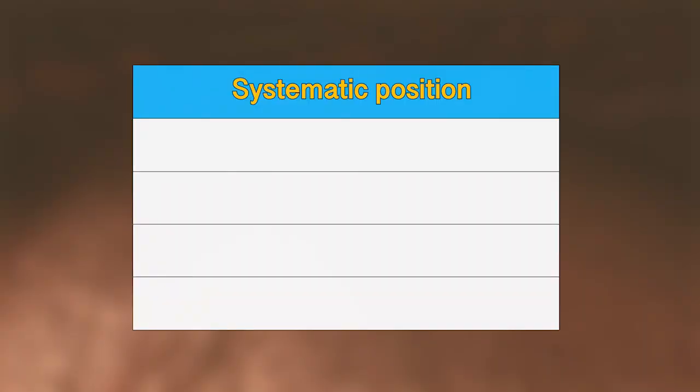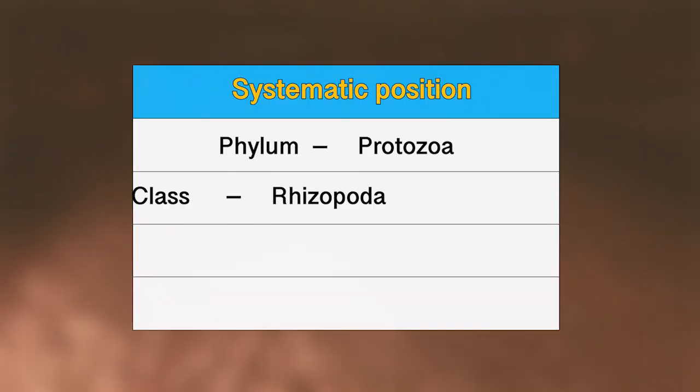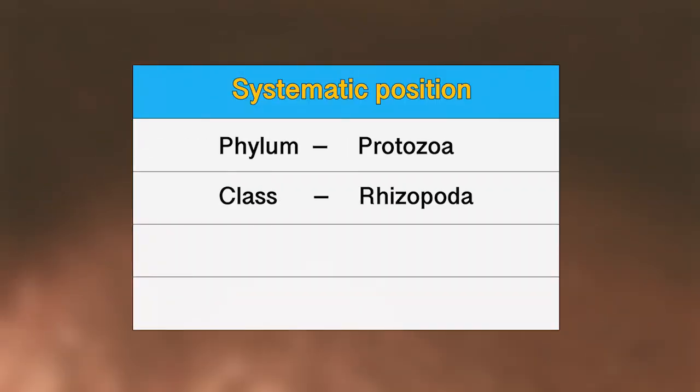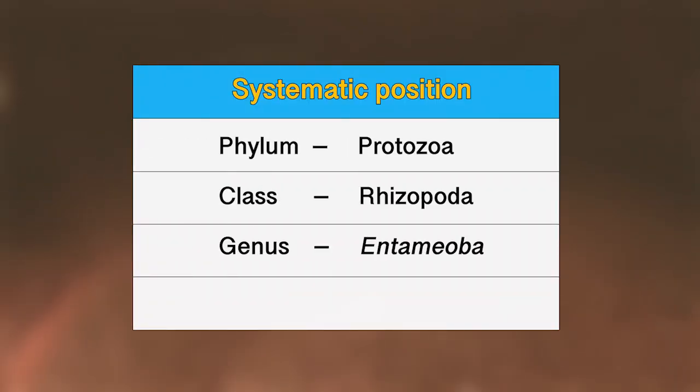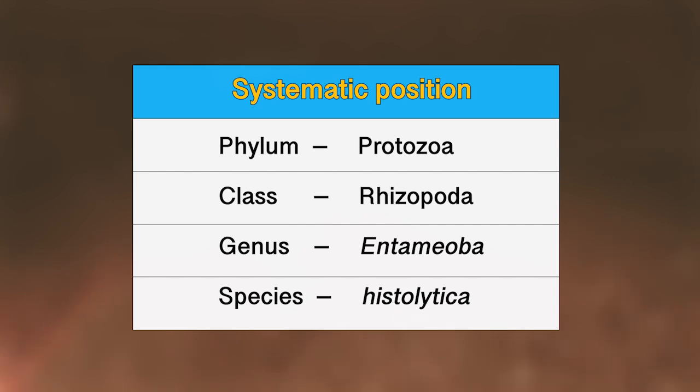The systematic position of Entamoeba histolytica includes: Phylum Protozoa, Class Rhizopoda, Genus Entamoeba, and Species histolytica.